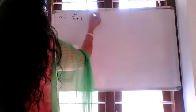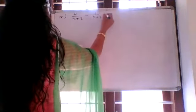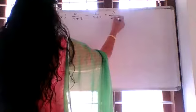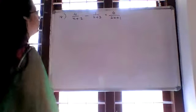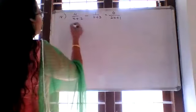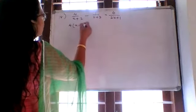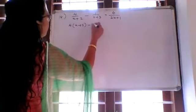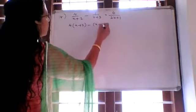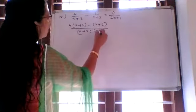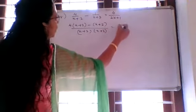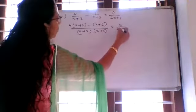Question 18: 4 divided by x plus 2, minus 1 divided by x plus 3, equals 4 divided by 2x plus 1. Taking LCM, the numerator becomes 4 into x plus 3 minus 1 into x plus 2, over x plus 2 into x plus 3, equals 4 divided by 2x plus 1.